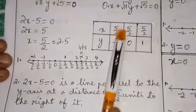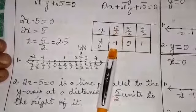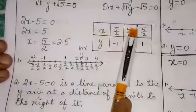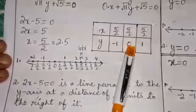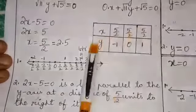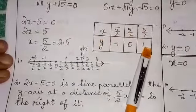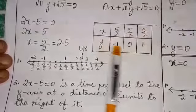So when x is 5 by 2, y can be any value, say minus 1. When x is 5 by 2, y can be any value, like 0. When x is 5 by 2, y can be any value, like 1. We could take any values for y.